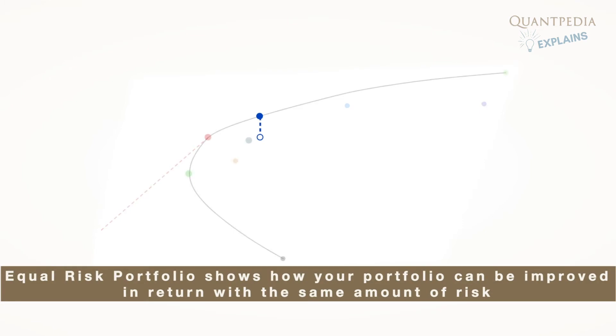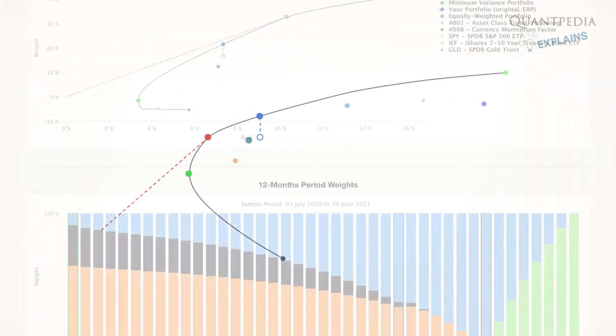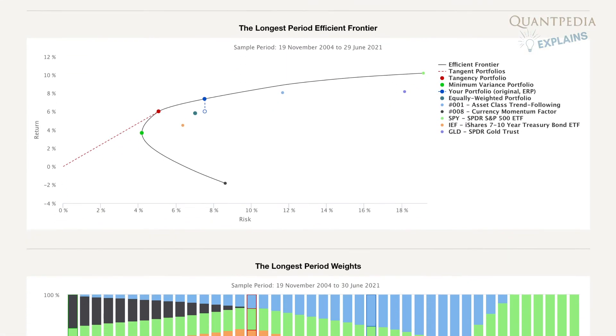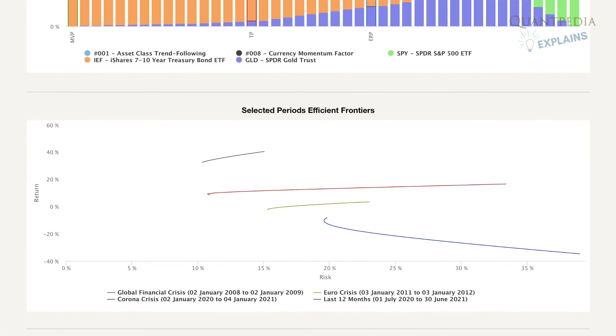Equal risk portfolio shows how your portfolio can be improved in return with the same amount of risk. The efficient frontier charts are displayed for various periods and constraints.